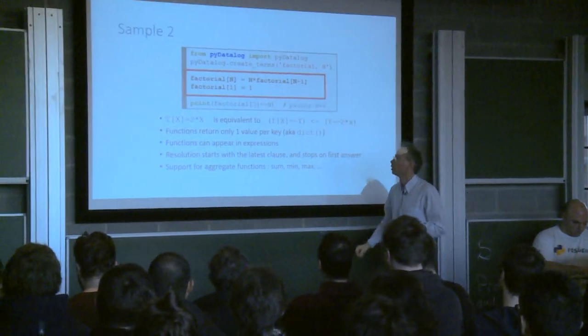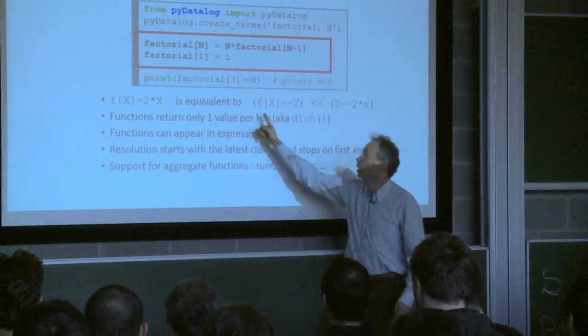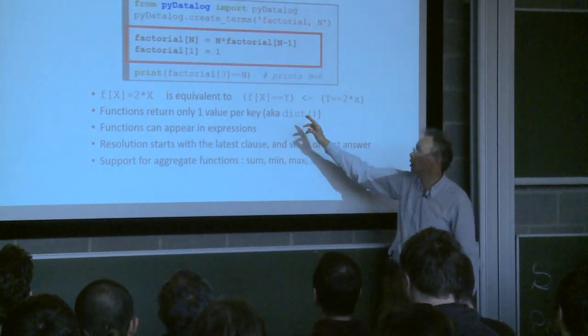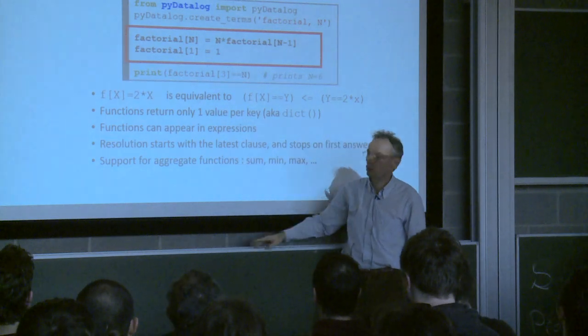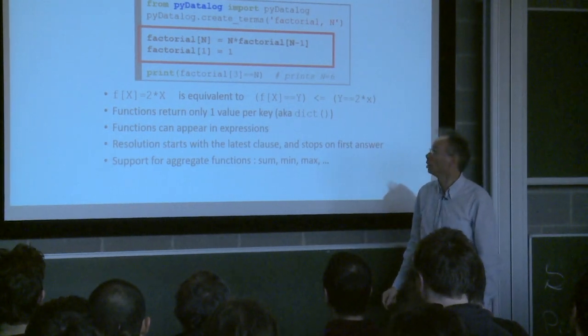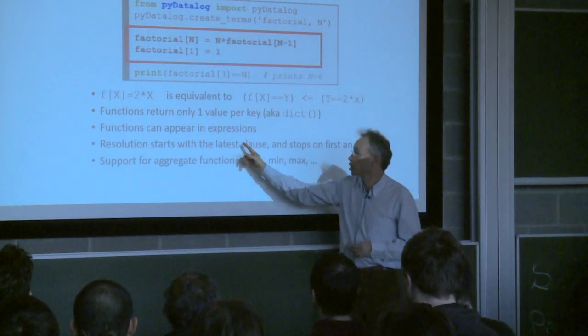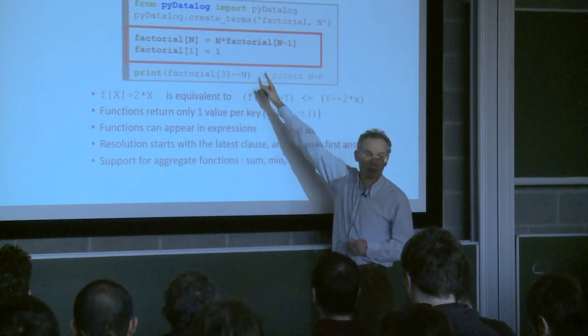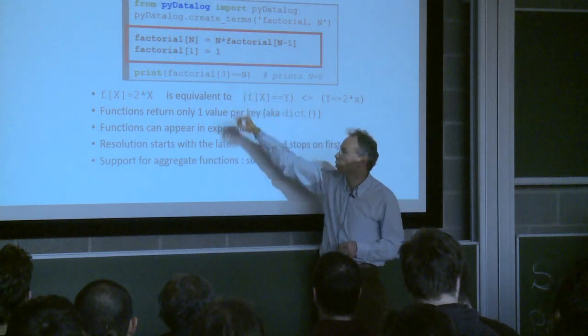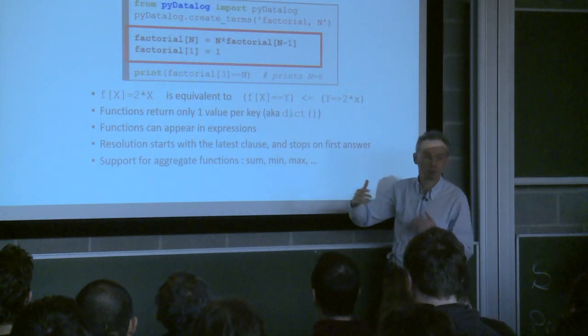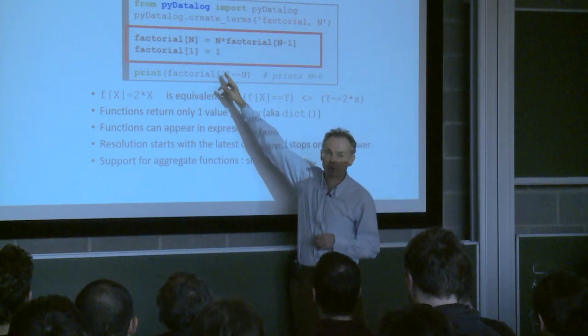So let's go back to the factorial example. First, notice that f(x) = 2 times x is actually equivalent to this, if you want to have the traditional logic programming presentation. So it's a shorthand notation, but that's very convenient. These functions only return one value, so they work very much like a dictionary, except that it's dynamic, because it's calculating things rather than just looking at it from a database. Such functions can appear in an expression, that's what you see here. The factorial is on the left, but also on the right of the first assignment. And the resolution starts with the latest clause, that is factorial of 1 is 1, and it stops on the first answer. So that's how you avoid having ifs, because by looping through recursively to the factorials, at some point it will stop when it arrives with factorial of 1 is 1.